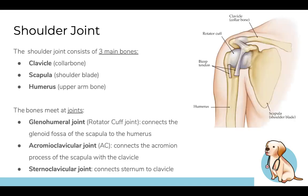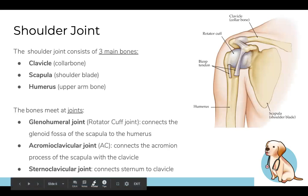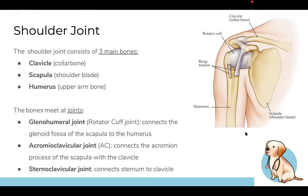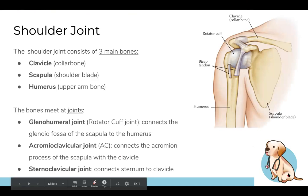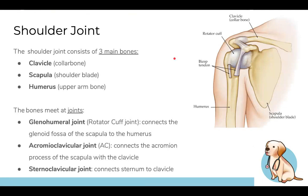The shoulder joint consists primarily of three bones: the clavicle, the scapula, and the humerus. These bones meet at several joints — three main ones to know. The glenohumeral joint is made up of the glenoid fossa within the scapula and the humerus, also known as the rotator cuff joint. The acromioclavicular joint is between the acromion on the scapula and the clavicle. And the sternoclavicular joint joins the sternum to the clavicle.